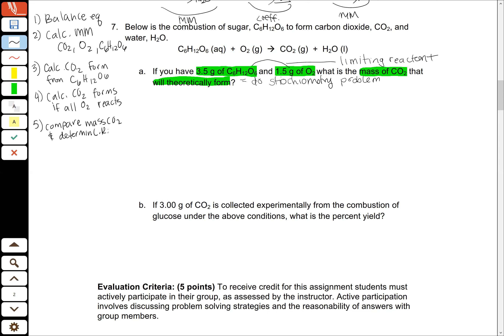We're going to start with balancing our equation. We have six carbons on one side, so we'll need a six in front of our carbon dioxide in the products — that way we have six carbons on both sides. I'm going to put a six coefficient in front of water too, because six times two will give me 12 hydrogen on my product side, and that matches the 12 hydrogen on my reactant side. I'm going to total up all the oxygen on my product side: I've got six times two, that's 12.